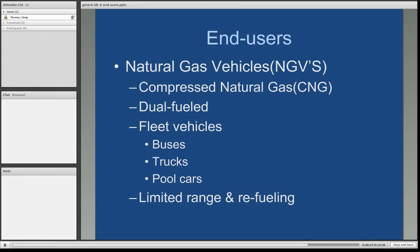Natural gas vehicles have actually been around for a couple of decades, and there is a push to utilize them more and more using compressed natural gas. The most efficient types are dual-fueled, so you can use gasoline or natural gas depending on what's available. They are ideal for fleet vehicle usage — public schools running buses, cities running buses, companies such as FedEx, UPS, and the U.S. Postal Service. They are very well-suited for short-term commuting routes. One of the challenges with compressed natural gas vehicles is their limited range.